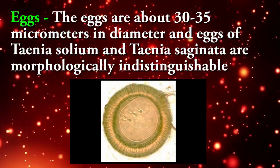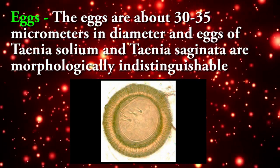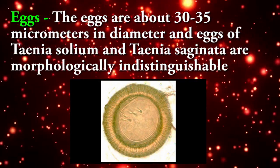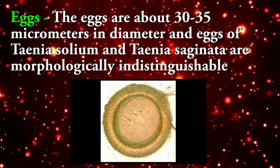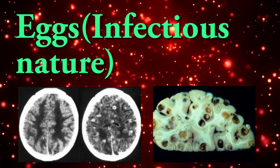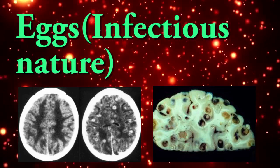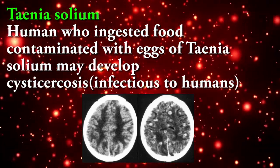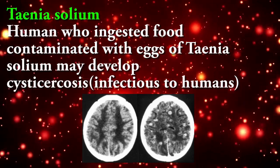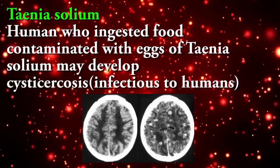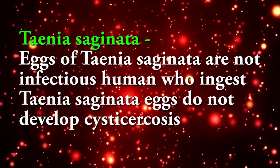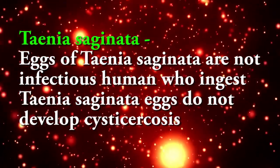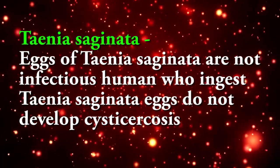The eggs are about 30 to 35 micrometers in diameter. Taenia solium and Taenia saginata eggs are morphologically indistinguishable. Infectious nature: Taenia solium — and we will see you next time.